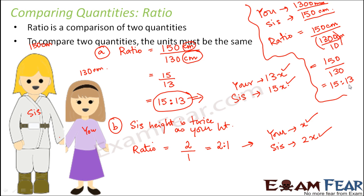So 15:13 is the correct ratio of your sister's height to yours. Now just think about what would have happened if you had not converted millimeters to centimeters — the ratio would have been 130 is to 15, which is a completely different and misleading ratio. Therefore, whenever you want to compare two quantities, make sure they have the same unit, and if they don't, convert them to the same unit.